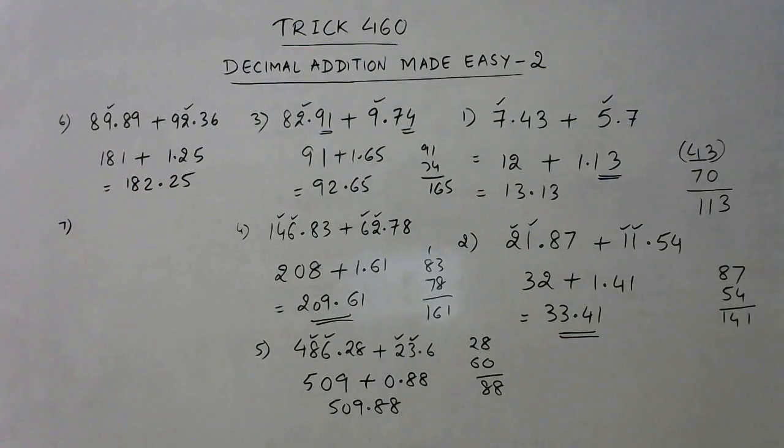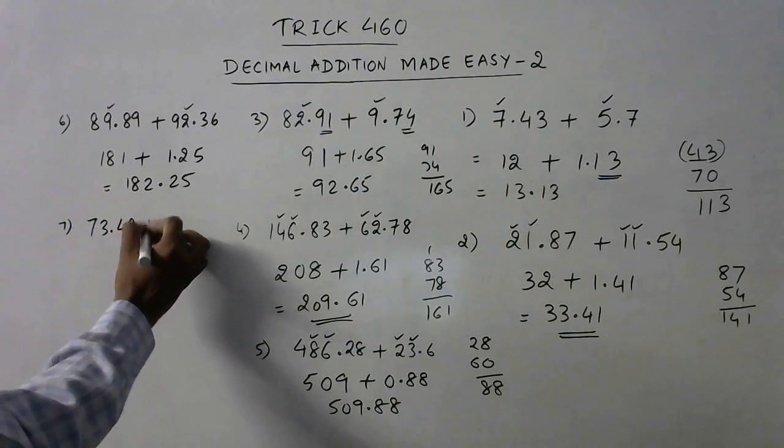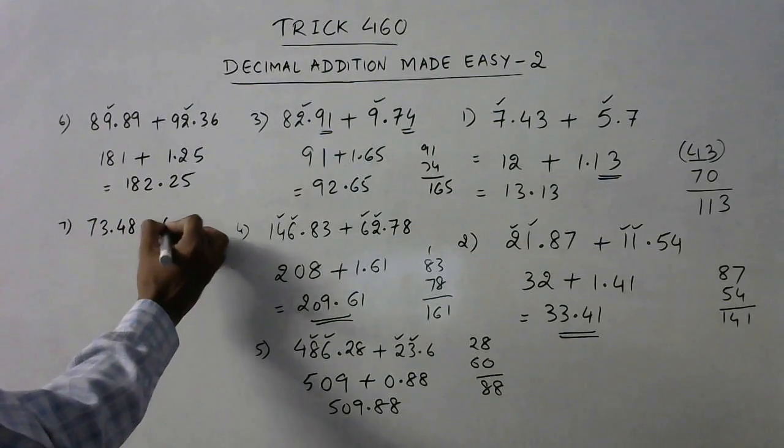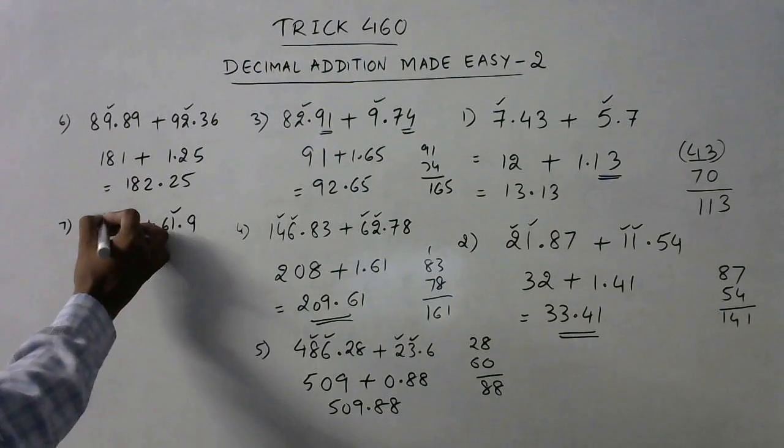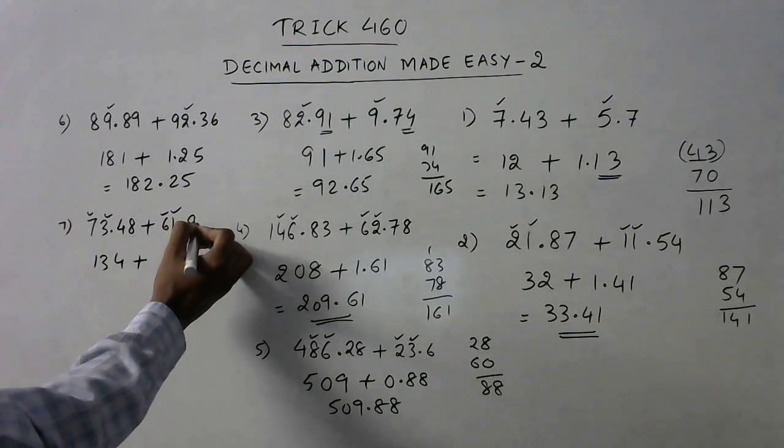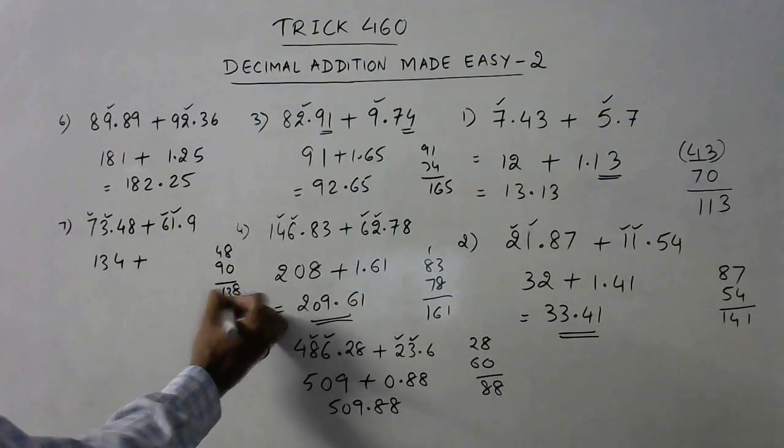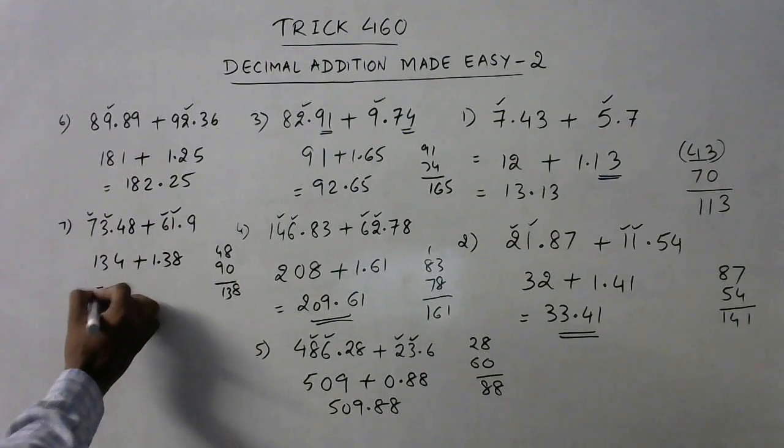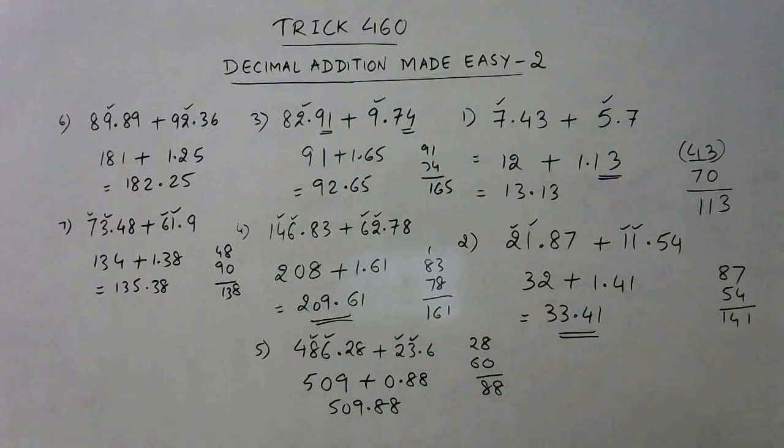Some more examples in which the number of digits after the decimal place are different. Say we have 73.48 added to 61.9. So 1 plus 3 is 4, 7 plus 6 is 13. Now we have to write 48, and below that we have to write 9, so we have to put a zero, so 138. So we will write it as 1.38, and when we add them, 135.38 becomes your answer for this question.